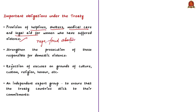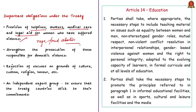Signatories must also strengthen the prosecution of those responsible for domestic violence. Importantly, the treaty rejects excuses on grounds of culture, custom, religion and honour — meaning member states cannot cite these as justifications for the crimes mentioned. The convention ensures compliance through an independent expert group tasked with ensuring that treaty countries stick to their commitments. From this we can understand that this treaty is a comprehensive legal framework to protect women against all forms of violence.